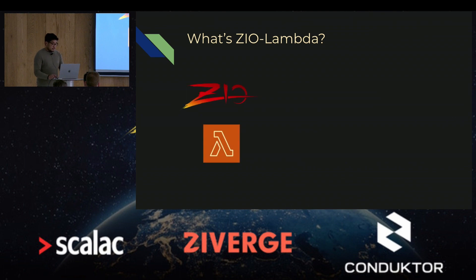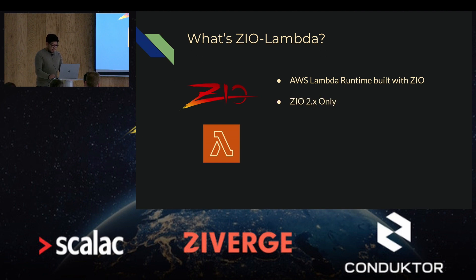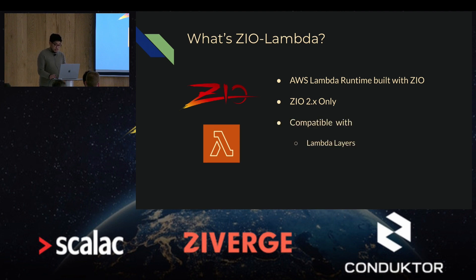ZIO Lambda is an AWS Lambda runtime that allows you to build your Lambda function entirely with ZIO. This runtime is only ZIO 2 compatible, and is also compatible with Lambda layers and GraalVM.